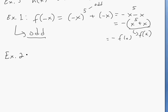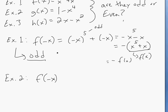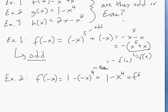For example 2, again you put f of negative x inside and compare what happens. You get 1 minus negative x to the power of 4. Since the exponent is even, that becomes 1 minus x to the 4th, which equals f of x. So this one is even.